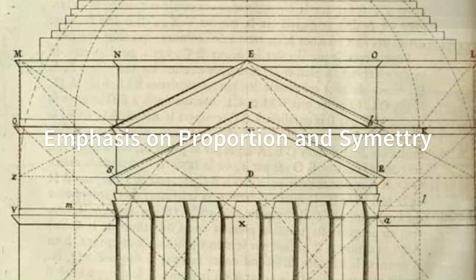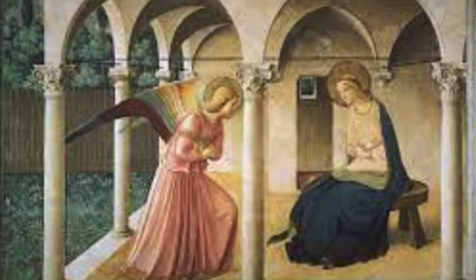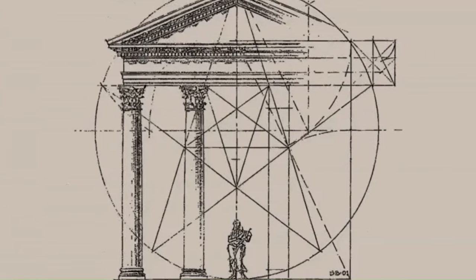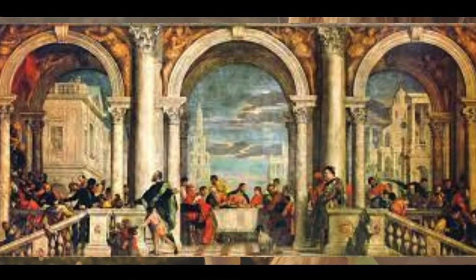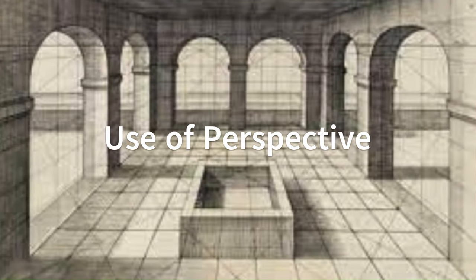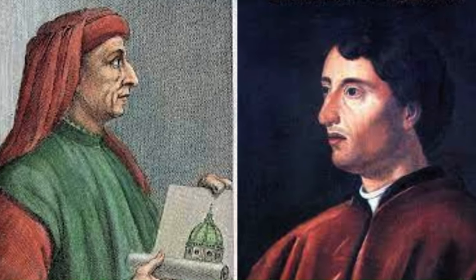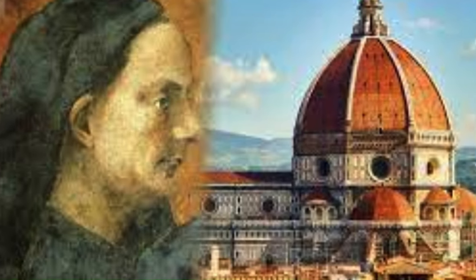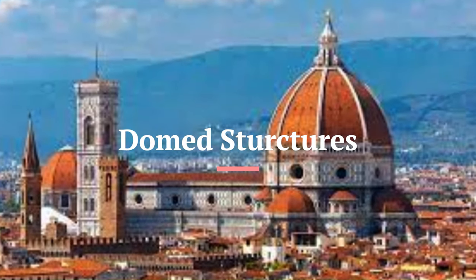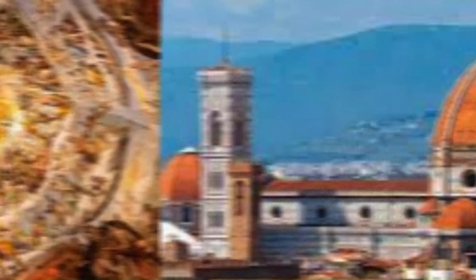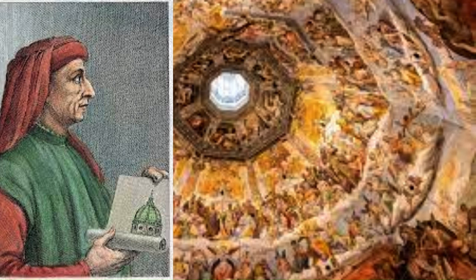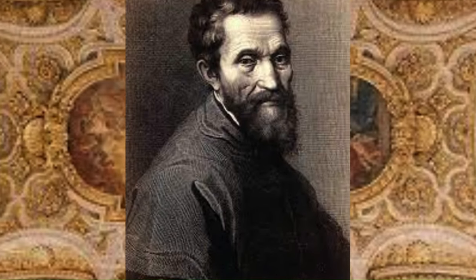Renaissance architects placed a strong emphasis on proportion and symmetry in their designs, using mathematical principles to create harmonious and balanced compositions, resulting in buildings that appeared visually pleasing and intellectually satisfying. The development of linear perspective by artists like Filippo Brunelleschi and Leon Battista Alberti had a profound impact on architectural representation, as architects began using perspective drawings to convey three-dimensional space on a two-dimensional plane. The Renaissance also saw the development of innovative dome structures, such as the dome of Florence Cathedral designed by Filippo Brunelleschi and the dome of St. Peter's Basilica in Rome designed by Michelangelo, which became iconic architectural achievements of the era.